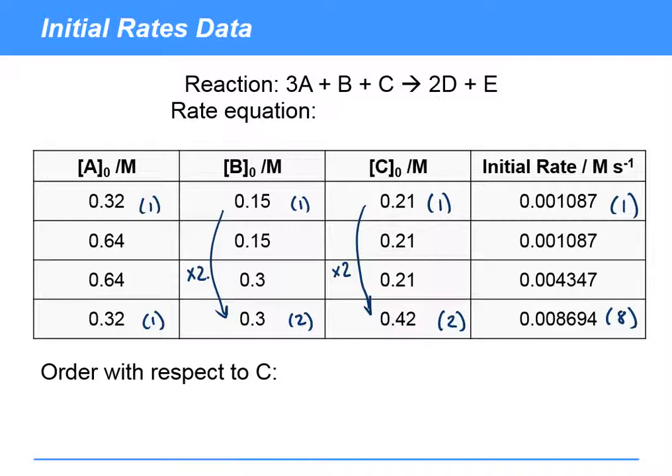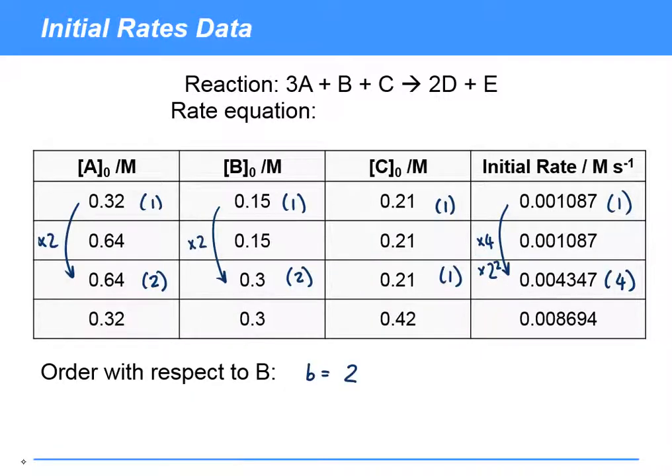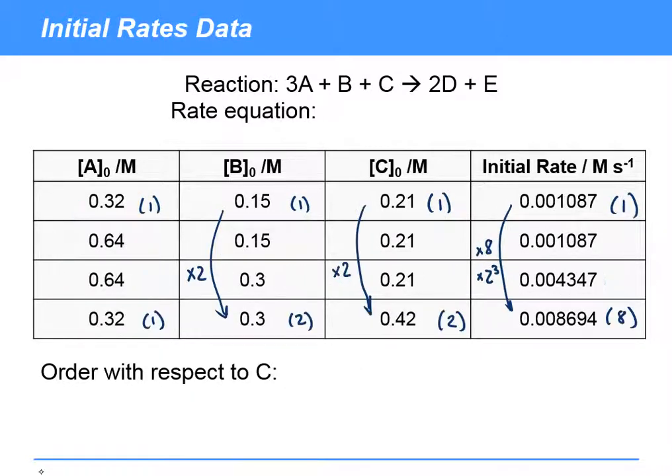But here what we've got is the rate has gone up by a factor of 8, or 2 cubed. But now remember that because B has been doubled, we'd expect an increase of a factor of 4 from B being doubled. And so what we've also got is another doubling due to C. And so what we're going to say here is that effectively B plus C must be equal to 3, because we've got an overall 2 to the power 3 change. But because B is 2, we know that C equals 1.